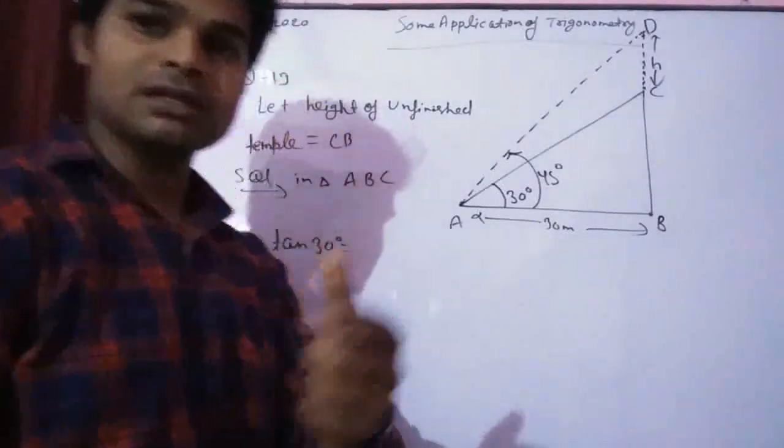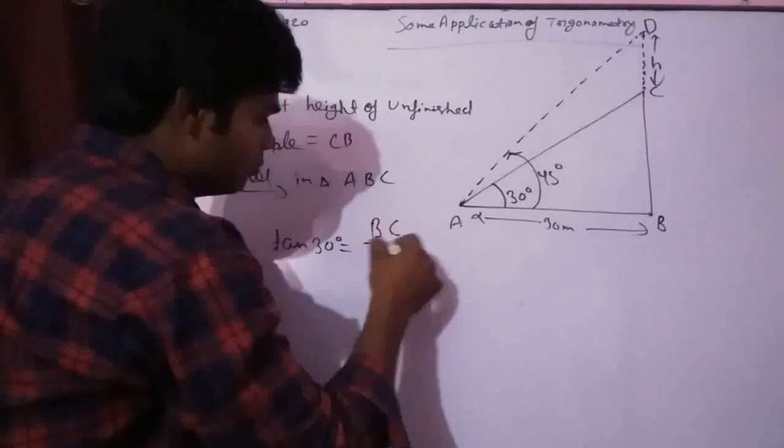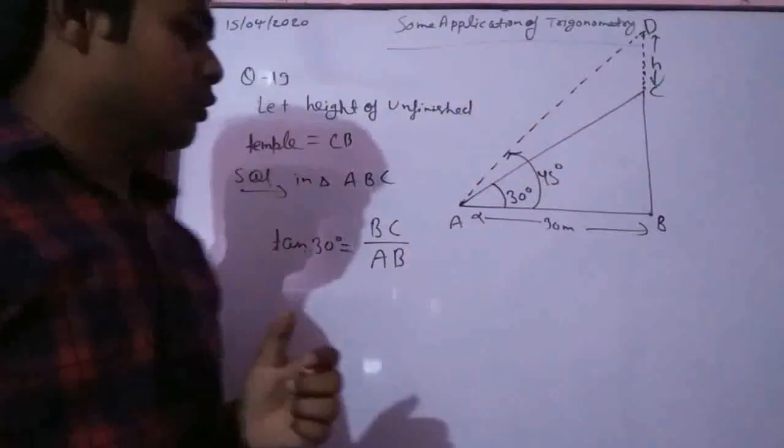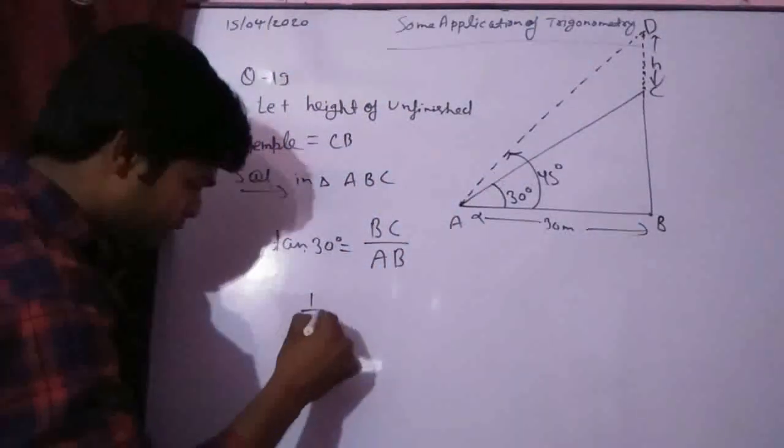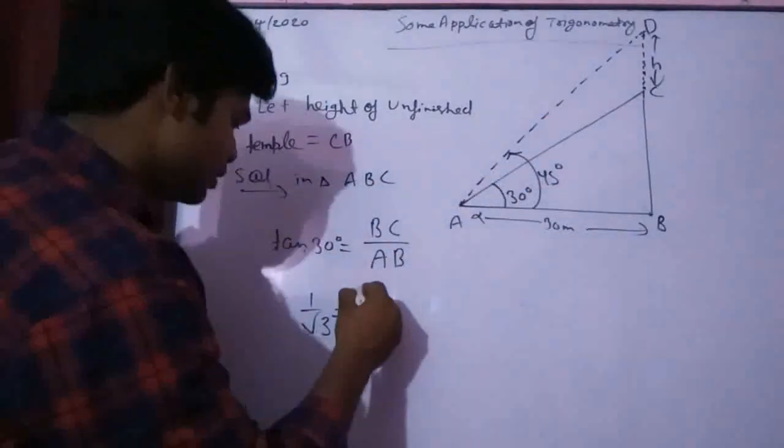Now we use tan 30 degrees equals BC by AB. We put the value of tan 30 degrees, that is 1 by root 3, and we have the value of AB equals to 30.